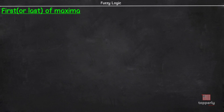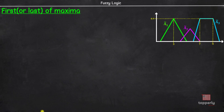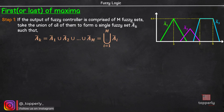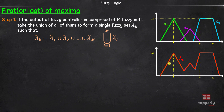The first or last of maxima is a very simple method. Let me try to explain it with the help of an example. Consider 3 fuzzy outputs a1, a2, and a3 like this. The first step is to take the union of the fuzzy sets. If we take the union of fuzzy sets a1, a2, and a3, we will get a fuzzy set ak like this.